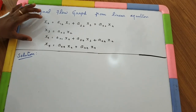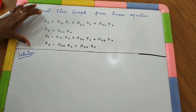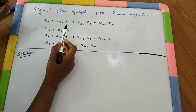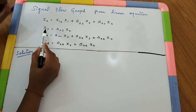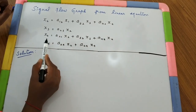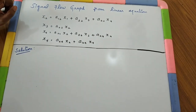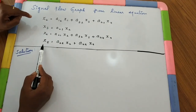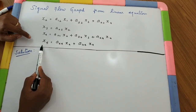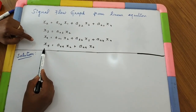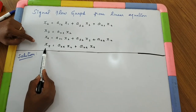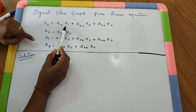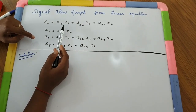First, we have to check how many nodes are there. X1, X2, X3, X4, X5 — five nodes are there. X5 node is there in the last equation. So let us take X5 node as the output node and X1 node as the input node.